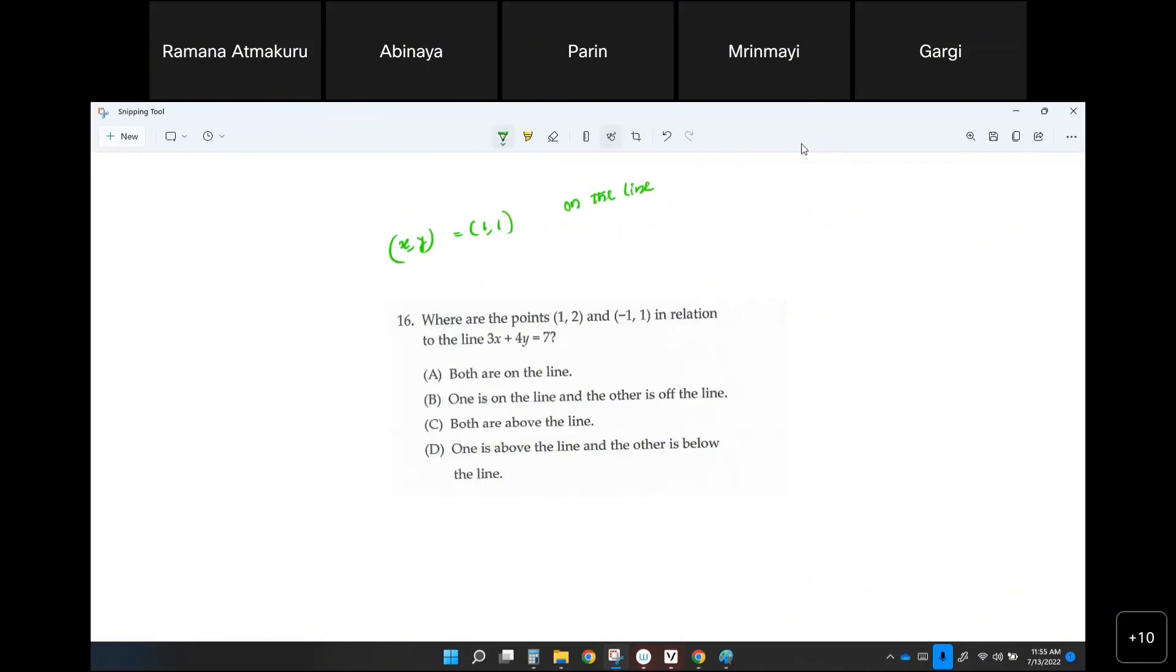Yes, if you plug in 1 comma 2, what do you get? 3 times 1 plus 4 times 2, which is 3 plus 8, 11. Isn't it actually more than 7, not equals to 7, correct? That means that is above the line.